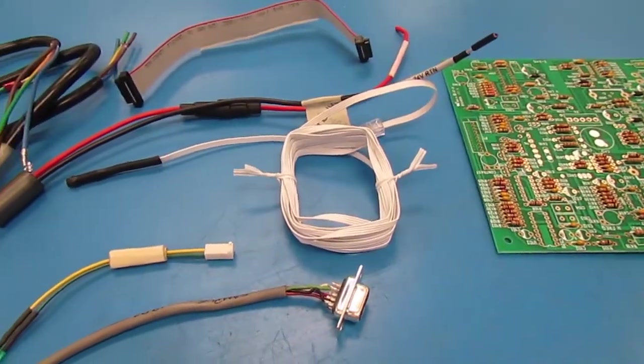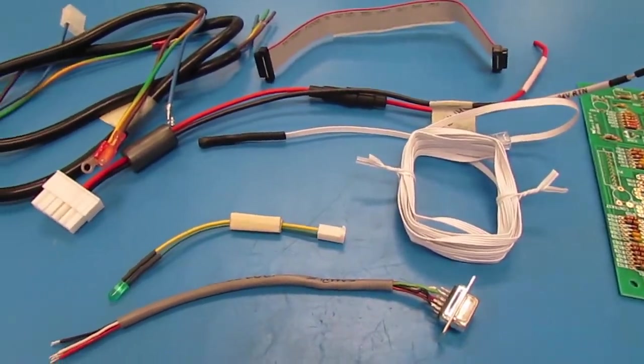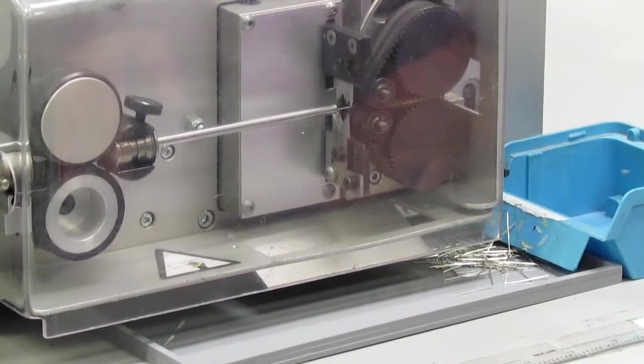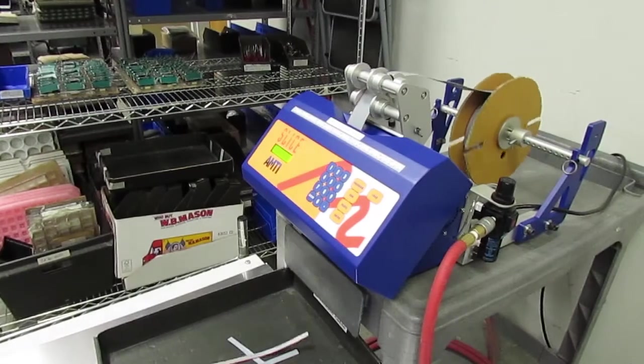Finally, many PCB contract manufacturers also do wire harness and cable assembly. Some of the capabilities you might look for include wire cutting and stripping for simple wires, as well as for ribbon cables.